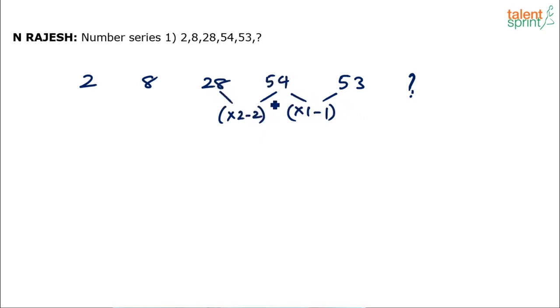28 into two, 56 minus two. So if I continue linearly it could be times three minus three. Eight into three minus three, so just check that. Eight into three is 24 minus three is 21, but here we have got 28. It is not working. Into three minus three is not working.